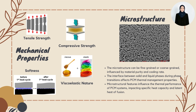This property necessitates careful handling and encapsulation to maintain structural integrity during operational cycles. Regarding microstructure, PCMs show different levels of heat conductivity depending on their crystallinity when melting or solidifying. The microstructure, which can be fine-grained or coarse-grained, is affected by factors like material purity and cooling rate. In the molten state, PCMs become amorphous, making them highly effective at absorbing heat. The solid-liquid interface during phase transition influences the thermal management properties of PCMs, and microstructure characteristics impact specific heat capacity and latent heat of fusion.